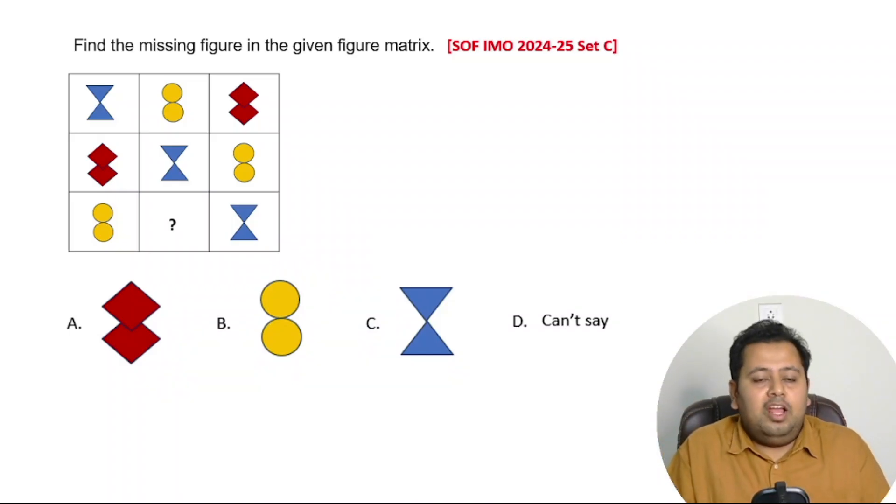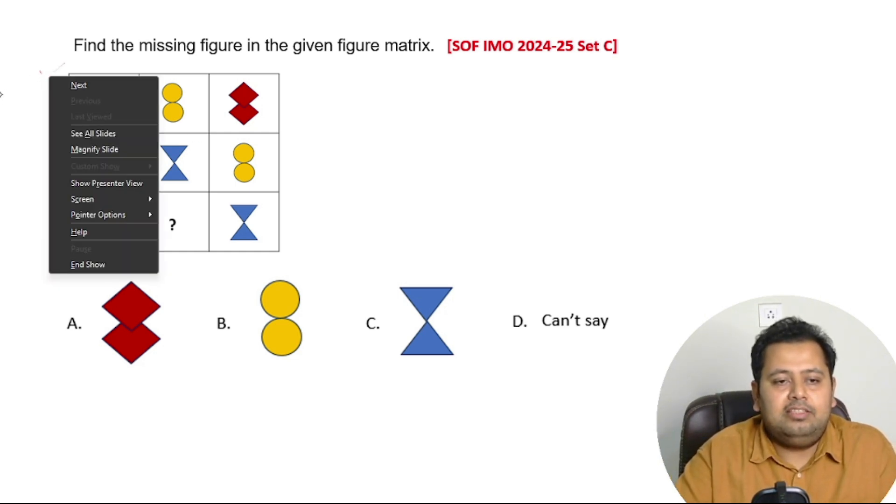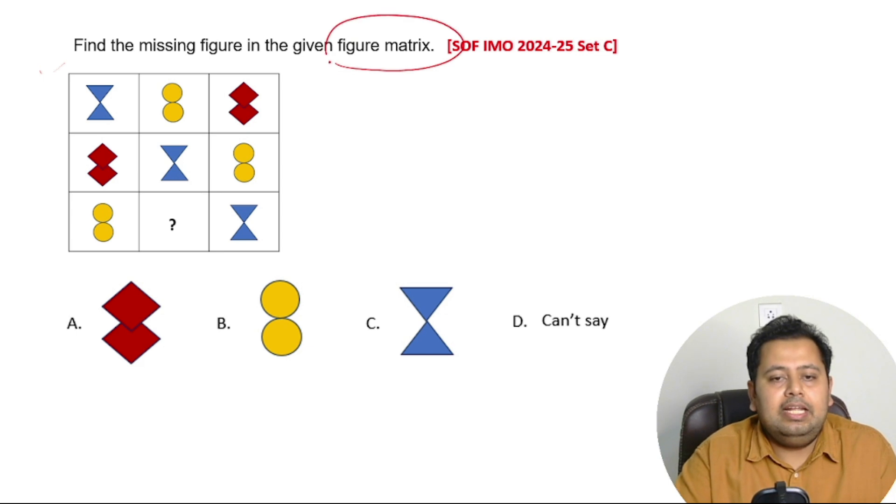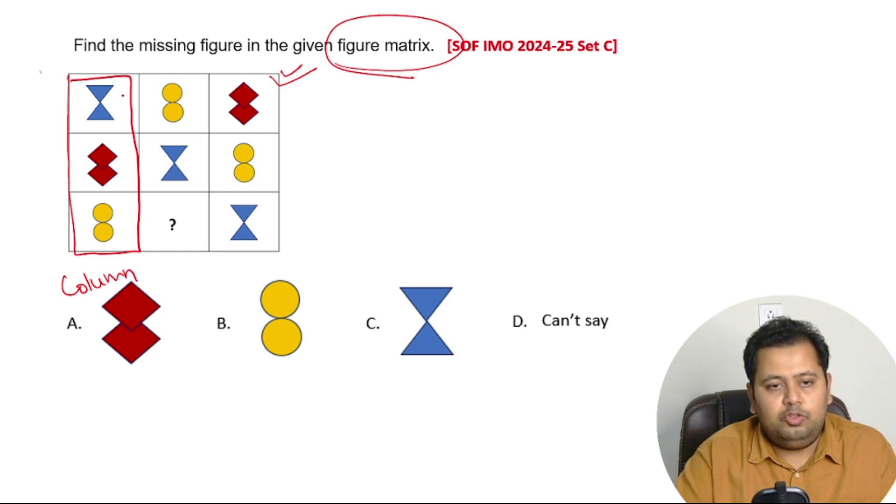Okay, so let's go to the solution now. What you are seeing is this is a figure matrix. In this figure matrix, this is something that is called a column, this is a column. So you have one column, you have the second column, you have the third column.